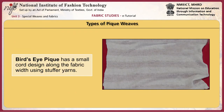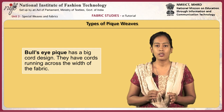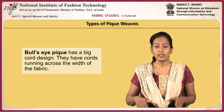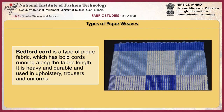There are various kinds of piqué weaves. Bird's eye piqué has a small cord design along the fabric width using stuffer yarns. Bull's eye piqué has a big cord design with cords running across the width of the fabric. Bedford cord is a type of piqué fabric which has bold cords running along the fabric length. It is heavy and durable and used in upholstery, trousers, and uniforms.